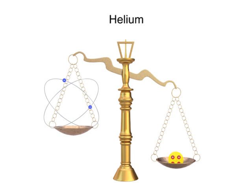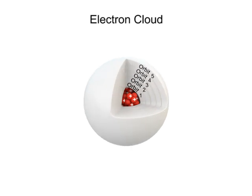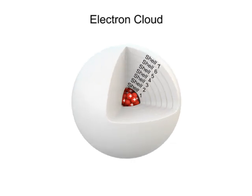Electrons are arranged in the electron cloud by the distance of their orbit from the nucleus. These orbital layers are also referred to as shells. Each shell can hold only a certain number of electrons.